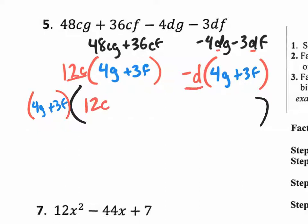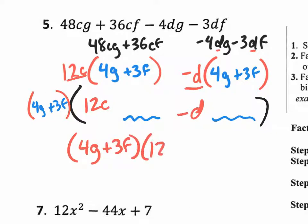The minus D that's left over, bring that down. I just leave the exaggerated parentheses so you could see that that common binomial is missing. So 4G plus 3F times 12C minus D. That's your answer.